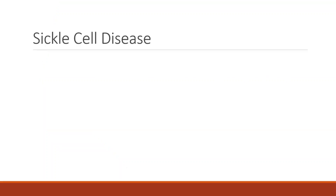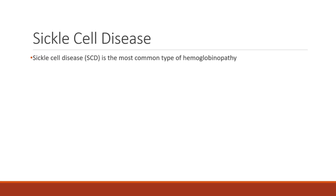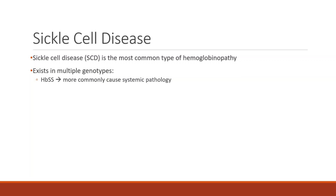First, some background about sickle cell disease. It is the most common type of hemoglobinopathy affecting populations with endemic malaria, most commonly of African descent. Around 100,000 people in the United States have sickle cell disease. Sickle cell disease is a result of multiple genotypes. The most common is hemoglobin SS, affecting 0.4% of African Americans.